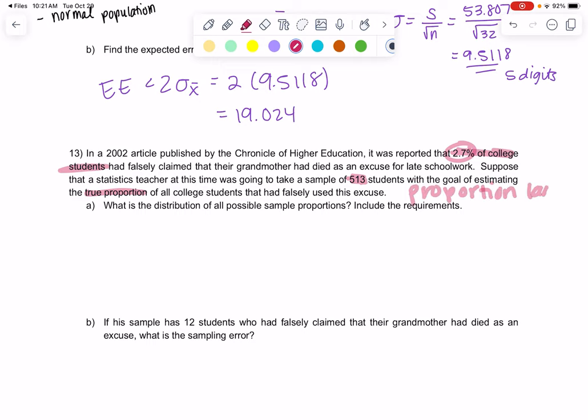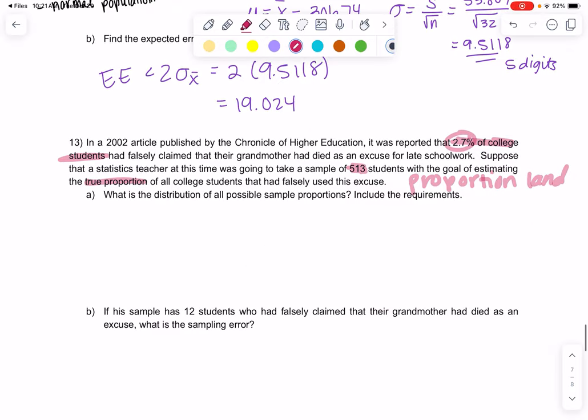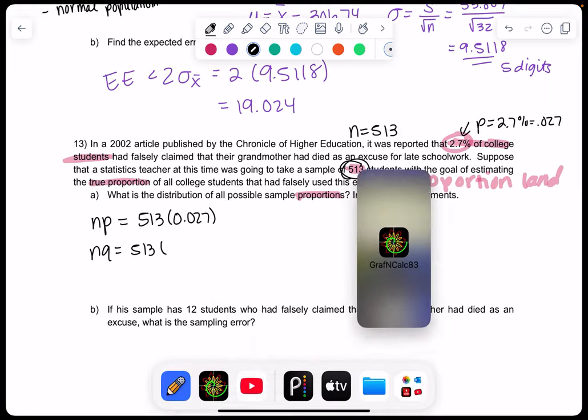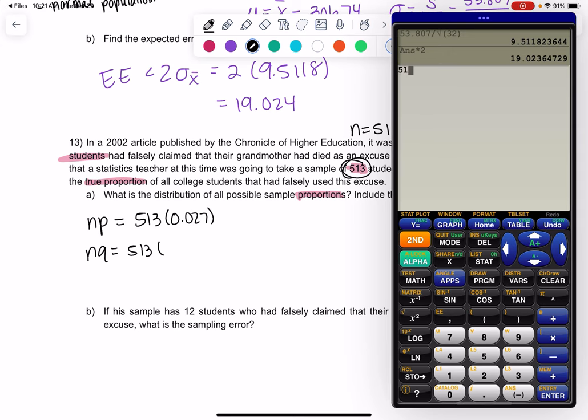Are the requirements met? It's not these requirements. The proportion land is different. We're going to do NP and NQ. N would be the sample size of 513, and then P would be the point, would be 2.7 or .027. So we're going to multiply .027 by 513. Hopefully we get at least 10. Remember, the rules are different for proportion land. And we do.